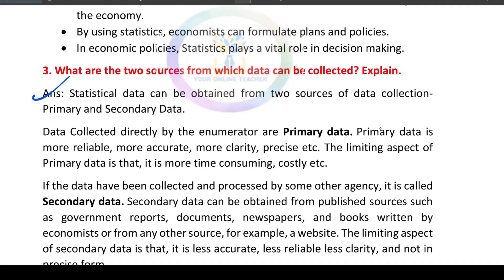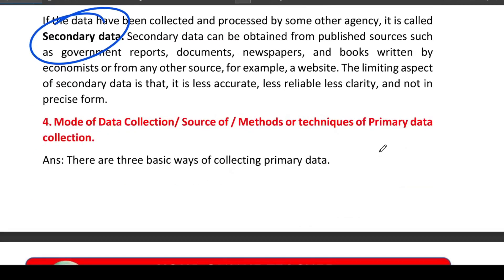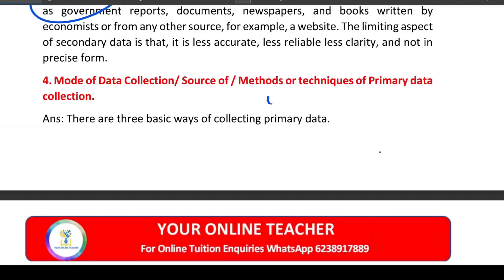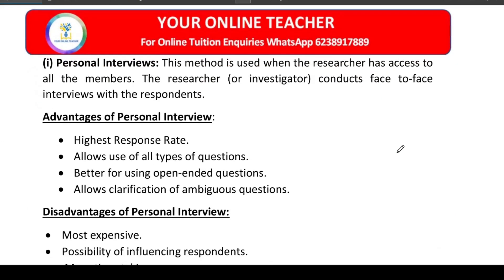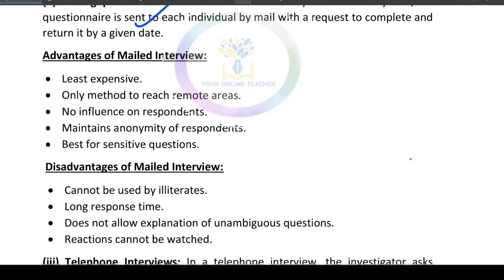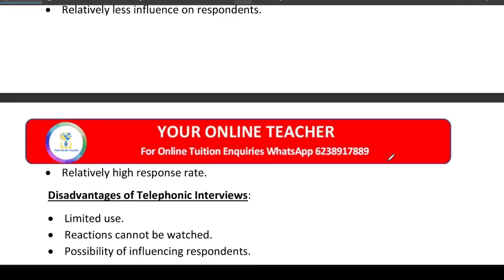The next important topic is two sources of data: primary data and secondary data. Where do you collect primary data? You collect primary data through personal interview contact, then mailing questionnaire, questionnaires by mail, and telephone interview. This covers the advantages and disadvantages.